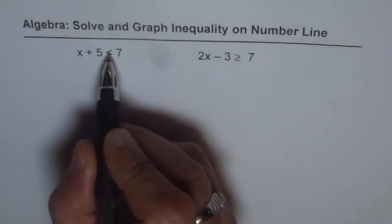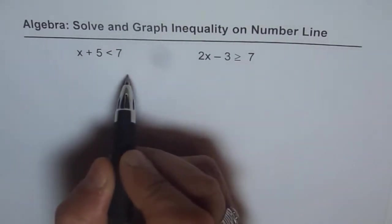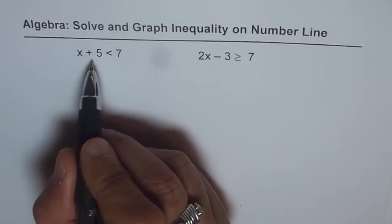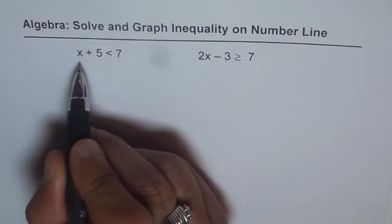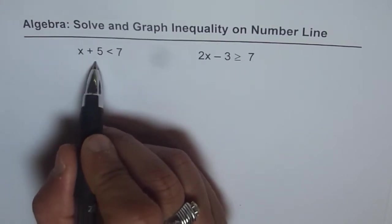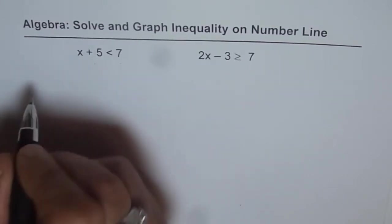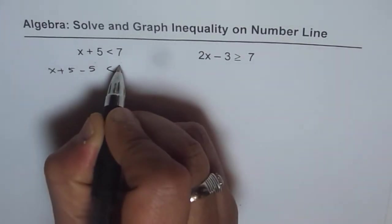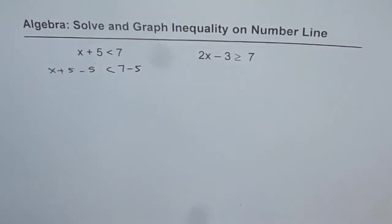So we have to align the symbol of inequality and solve for x. That is what we are going to do. It is x plus 5 less than 7. First step is to isolate for x. That we can do by taking away 5 from both sides.